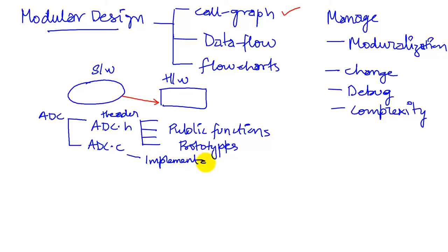The second file is ADC.C, which is the implementation — this is where the code that actually runs exists. We want to hide the implementation and expose only the public functions. This allows us the flexibility of improving or changing the implementation without changing how users call this module.